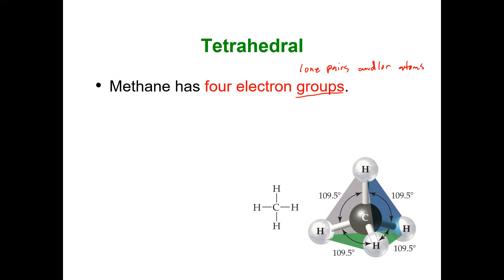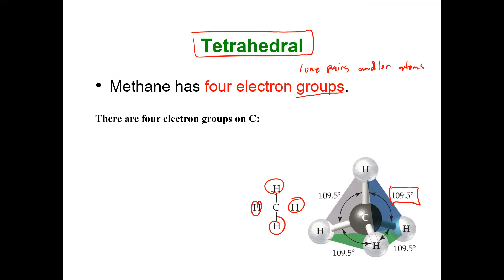In methane I have four atoms. I want to spread them as far apart as possible, giving a 109.5 degree angle and an electron geometry of tetrahedral. So there are four electron groups on carbon — four atoms — giving sp3 hybridization. I need to blend one s and three p orbitals, that's why I get the p3. This gives four hybridized orbitals.